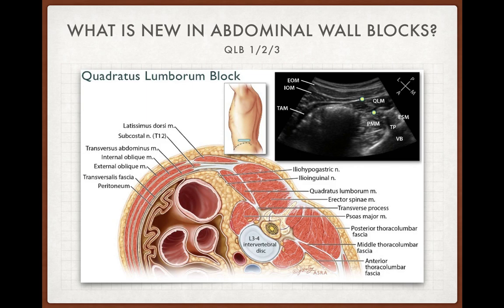What is new in abdominal wall blocks: quadratus lumborum blocks are emerging. There are three types — QL1 is just posterior to where the transverse abdominus muscle ends, injecting drug like a transversalis fascia block with spread anterior to the quadratus lumborum muscle; QL2 is anterior to the quadratus lumborum muscle; and the third is the transmuscular quadratus lumborum block. These are still new blocks with not enough evidence. They are said to provide some visceral analgesia and analgesia up to 48 hours, but there is not enough evidence to accept them in routine practice.